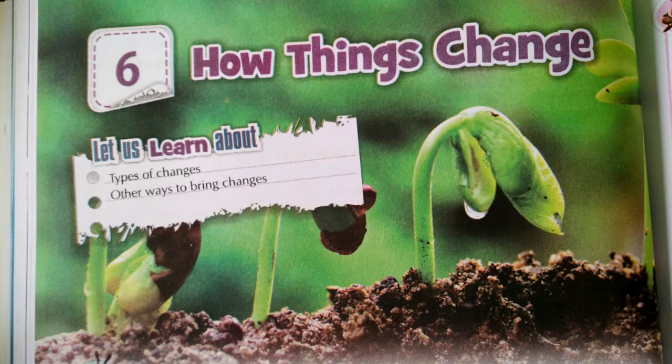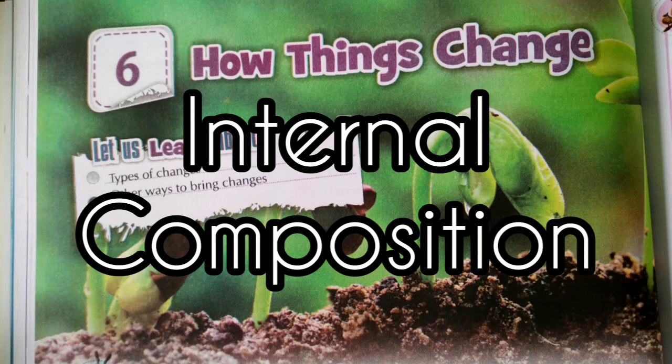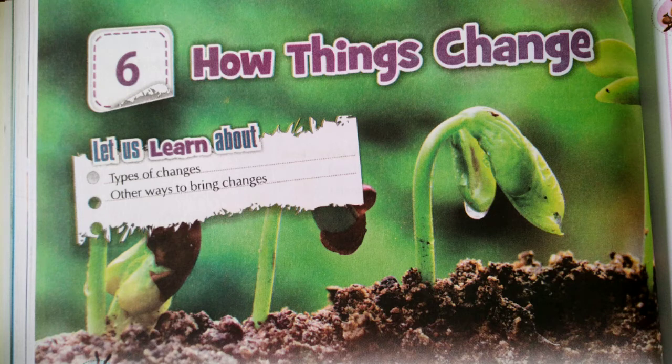These changes mainly affect certain parameters like shape, size, position, color, state, and internal composition. Then we started looking at types of changes: reversible changes, irreversible changes, physical changes, and chemical changes.